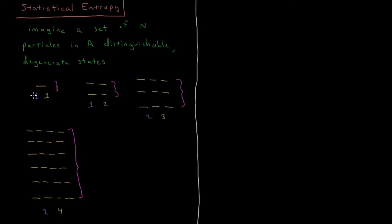For example, we have one particle and we have one state available. There's only one way to arrange that system, it's to put the particle in the state.